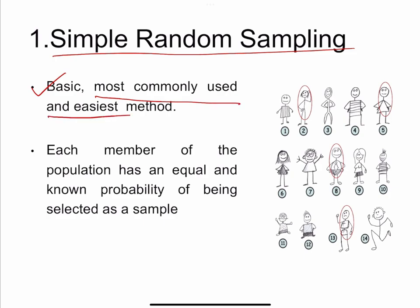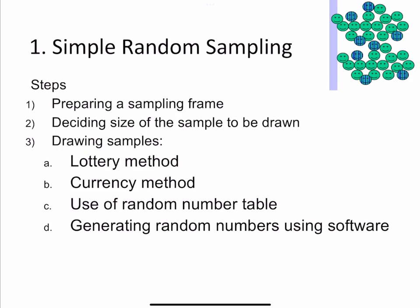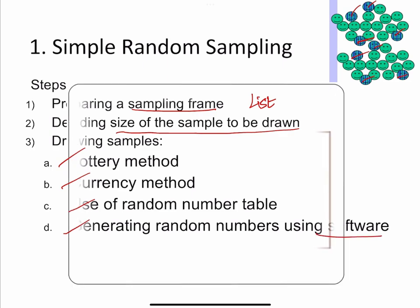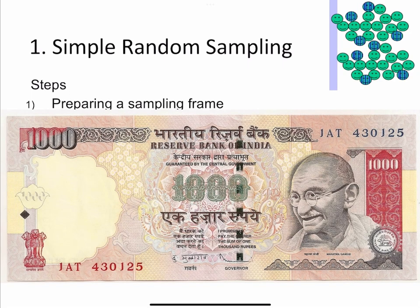First is simple random sampling — the basic type of random sampling, most commonly used and the easiest method. Each member of the population has an equal and unknown probability of being selected as a study sample. The steps involved are: select a population list or sampling frame, decide the sample size, then select samples randomly. Drawing the sample can be done by lottery method, currency method, use of a random number table, or by generating random numbers using software. In the lottery method, you draw participants one by one from the list.